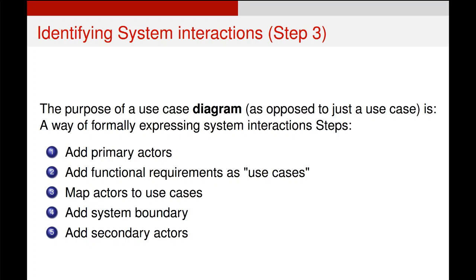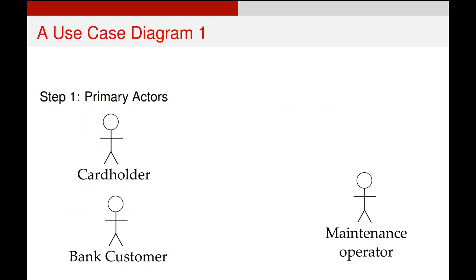In general, what we are going to do is add our primary actors in, add the functional requirements — what must we be able to do — that are relevant as use cases. Then we're going to connect the actors to the use cases, add the system boundary, and finally add our secondary actors.